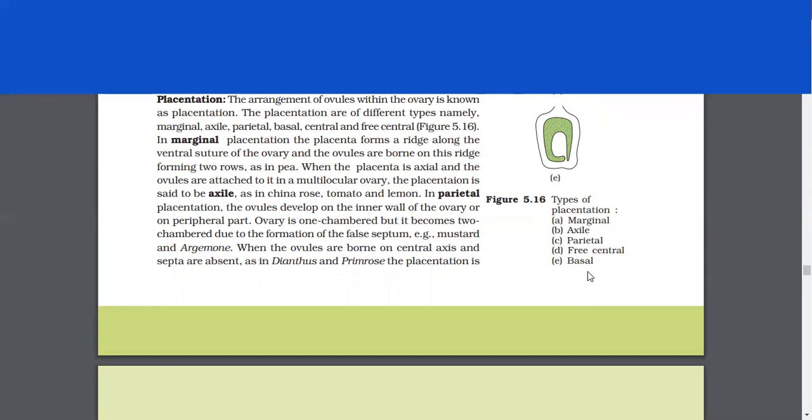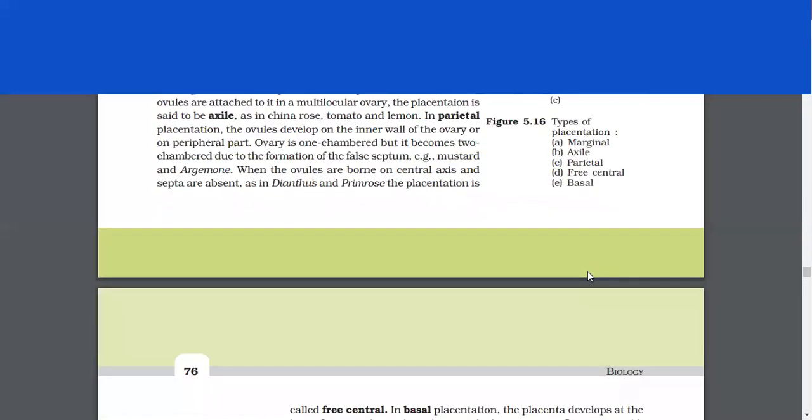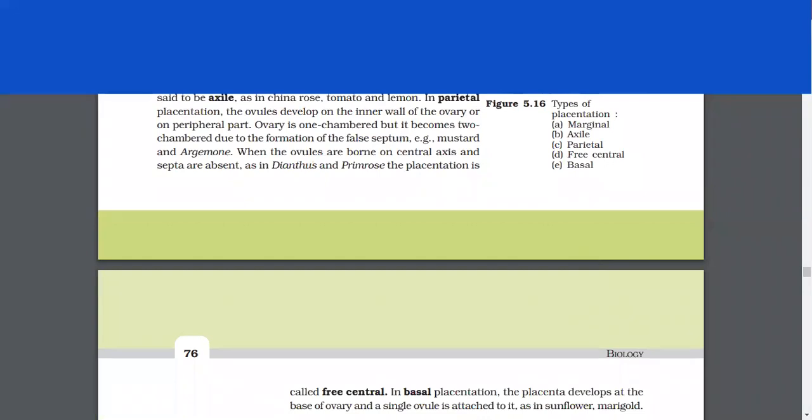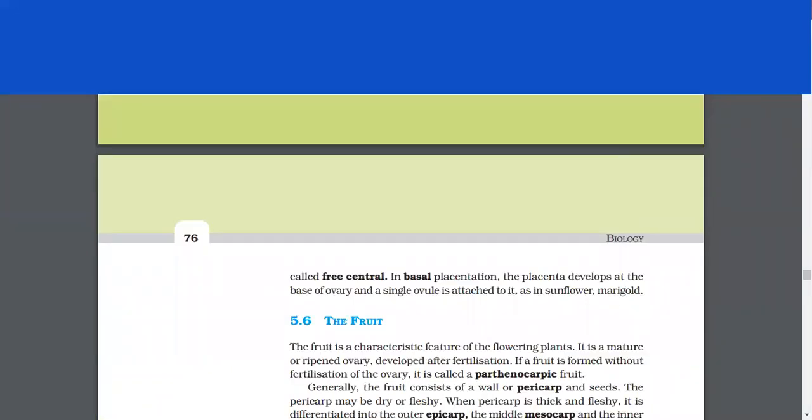When the placenta is axile and the ovules are attached to it in a multilocular ovary, the placentation is said to be axile as in china rose, tomato, and lemon. In parietal placentation, the ovules develop on the inner wall of the ovary or on the peripheral part. Ovary is one-chambered but it becomes two-chambered due to the formation of the false septum, for example mustard and argemone. When the ovules are born on central axis and septa are absent as in Dianthus and primrose, the placentation is called free-central. In basal placentation, the placenta develops at the base of the ovary and a single ovule is attached to it as in sunflower, marigold.